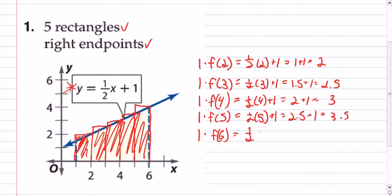Last one, one half times six plus one equals three plus one, which is equal to four.